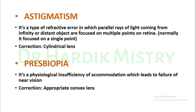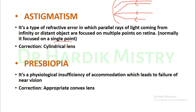Astigmatism is a refractive error in which parallel rays of light from a distant object are focused on multiple points on the retina, rather than a single point. Correction is with cylindrical lenses. Presbyopia is a physiological insufficiency of accommodation which leads to failure of near vision; correction is with appropriate convex lenses.